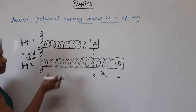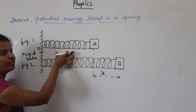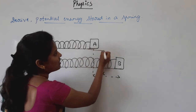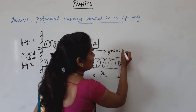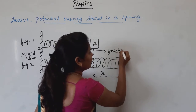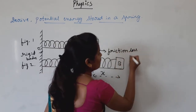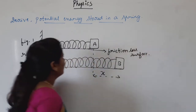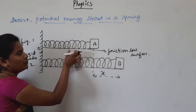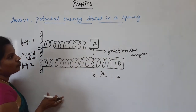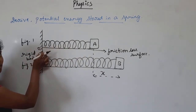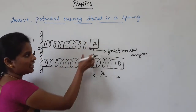Here the spring is of negligible mass and is placed on a frictionless surface. One end of the spring is attached to a rigid surface, and another end of this spring is connected to a block.